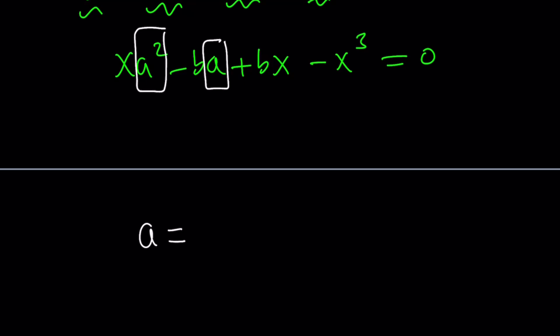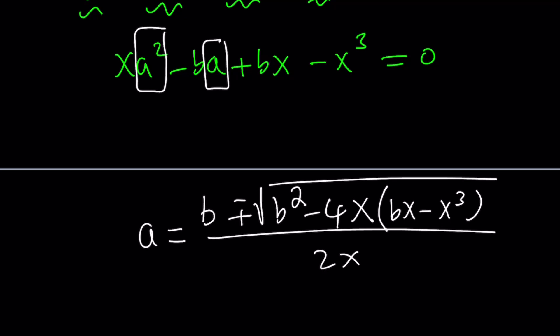The almighty quadratic formula says the negative b, the coefficient of a. In this case, actually, it's really negative b. So it's kind of nice to be or not to be. So that's going to be opposite of that, which is b. Plus minus the square root of b². That is actually b². Minus 4a, which is x.